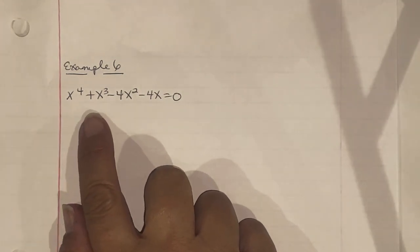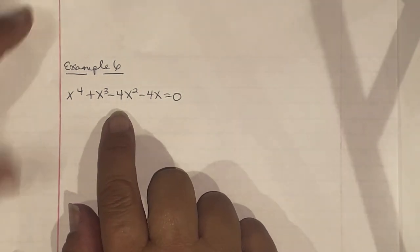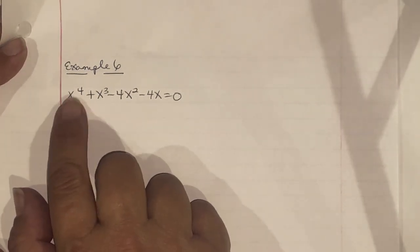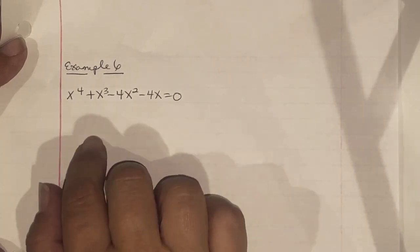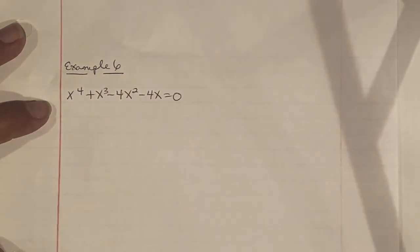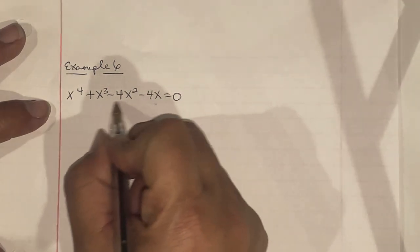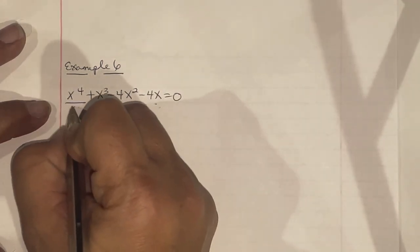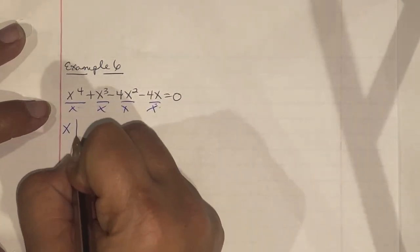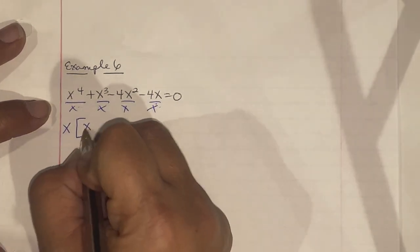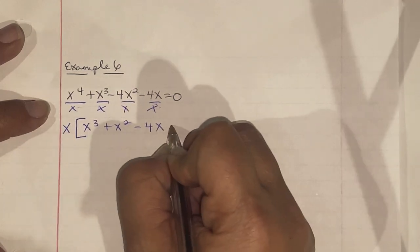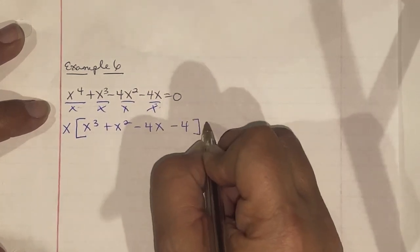The highest degree is the number of answers you should have — here the highest degree is 4, so we expect four answers. I notice all terms have an x in common, so I factor out x first, leaving x(x³ + x² - 4x - 4) = 0.